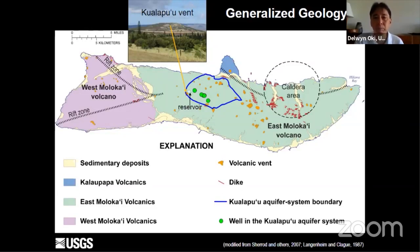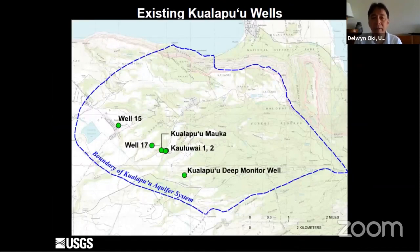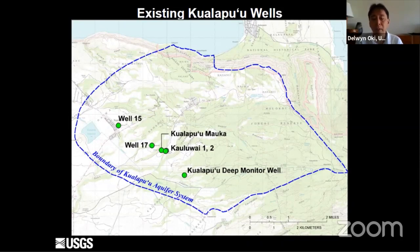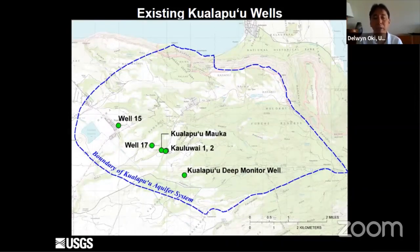There are a number of existing wells within the Kualapuu aquifer system. Well 15 was abandoned and never produced suitable drinking water. Further south is the Kualapuu deep monitoring well, which is just an observation well. Within the middle part, Well 17, Kualapuu Umauka, and Kukauluvai one and two are four active production wells within the Kualapuu aquifer system — these are the existing wells of concern in terms of future development.